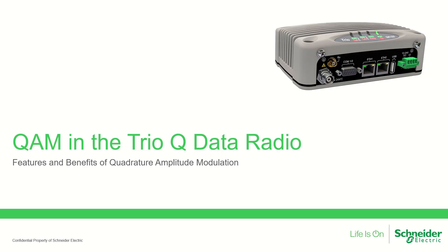In this short presentation, we will explore the features and benefits of quadrature amplitude modulation in the TRIO-Q data radio, along with related tools including TRIO's innovative implementations of forward error correction and dynamic speed selection. These are all available as of firmware version 2.4.